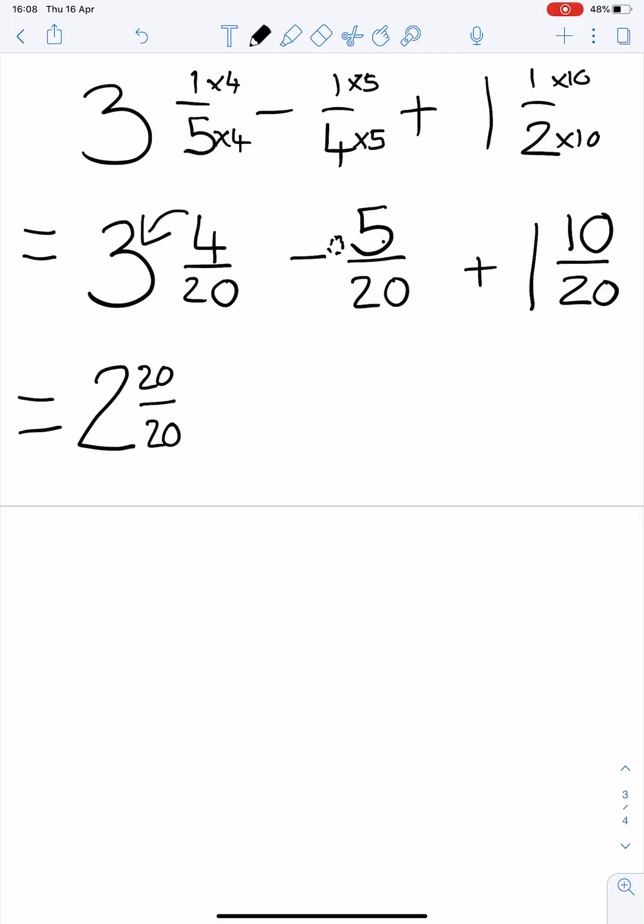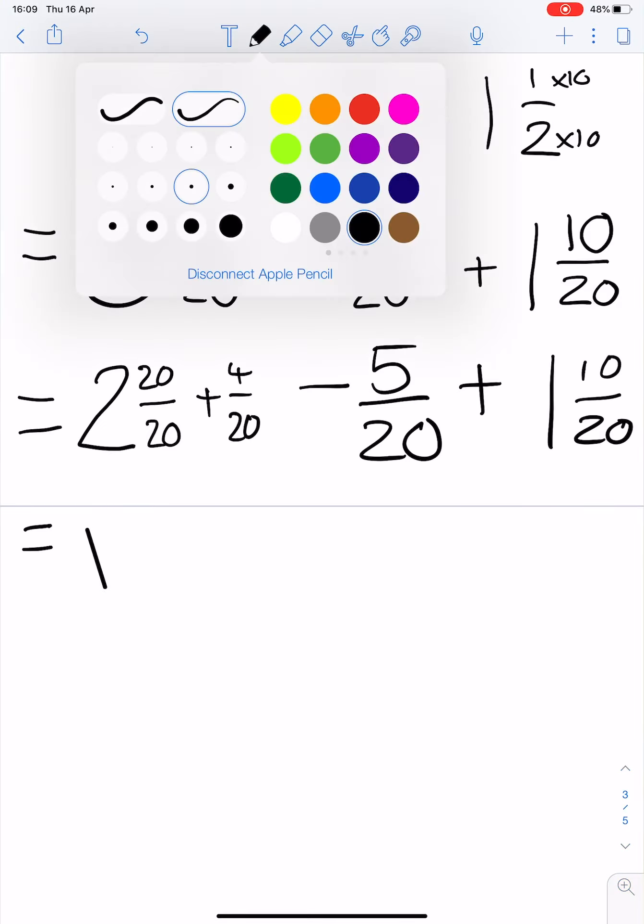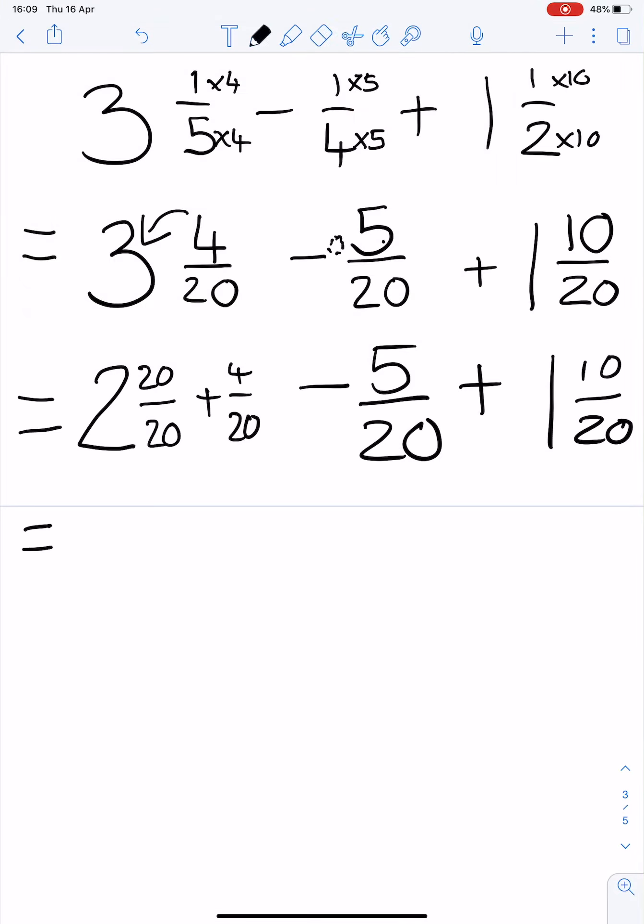3 is 2 and 20/20. 20 over 20 is 1. 2 plus 1 is 3, plus our 4/20 minus 5/20 plus 1 and 10/20.